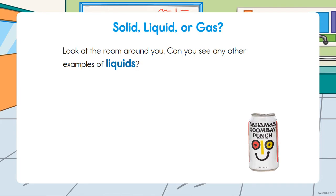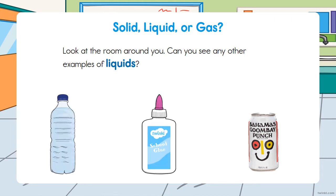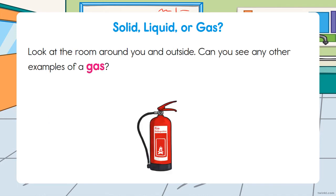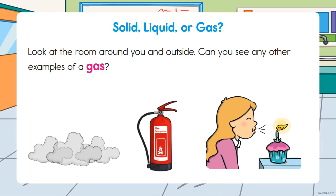Can we see any liquids? Yes — soda, water, and glue. Can we see any gases? Yes. A fire extinguisher contains gas. We will also see fog or clouds, or notice a person blowing out a candle — that is gas.